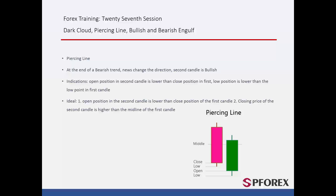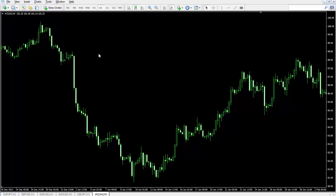The ideal Piercing Line pattern develops whenever the open price of the second candle is lower than the low price of the first candle, and whenever the close price of the second candle is above the midpoint of the first candle's whole body. In Dark Cloud and Piercing Line, fulfilling any of the ideal conditions indicates an appropriate price where a trade can be ordered for a successful trade.